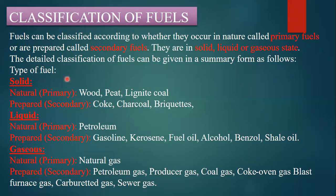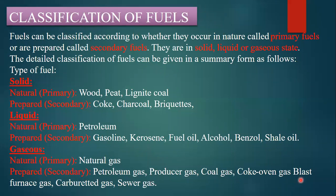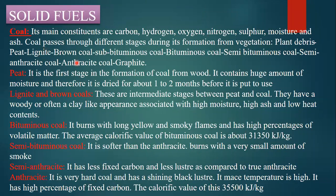In the detailed classification table: natural solid fuels include wood, peat, and lignite; secondary solid fuels include coke, charcoal, and briquets. For liquid fuels, the natural fuel is petroleum; secondary liquid fuels include gasoline, kerosene, fuel oil, alcohol, benzol, and shale oil. For gaseous fuels, the naturally available fuel is natural gas; artificial gaseous fuels include petroleum gas, producer gas, coal gas, coke oven gas, blast furnace gas, carburetted water gas, and sewer gas.